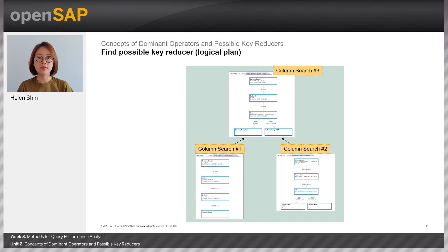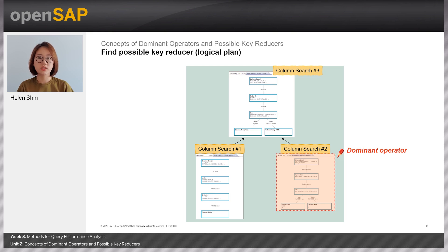So with this Logical Plan, let's find out the dominant operator and possible key reducer. In this example, the dominant operator is ColumnSearch2. When you recall the concept of ColumnSearch from last week's session, when a ColumnSearch is split into multiple ones, we call this a Stacked ColumnSearch. The ColumnSearch processes the natively supported operators in predefined order: Table, Join, GroupBy, and OrderBy. The aggregation operator is located at the top in ColumnSearch2, and this makes the Stacked ColumnSearch in this plan. Therefore, one single column search is not made, taking long time to process ColumnSearch2. We can call the aggregation operator the dominant operator.